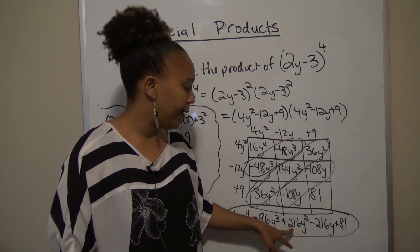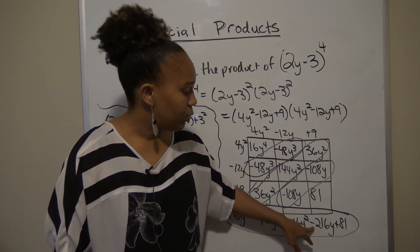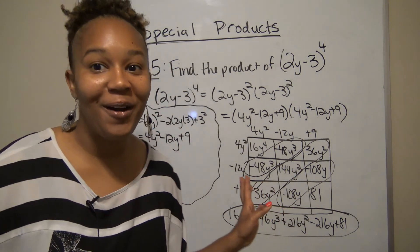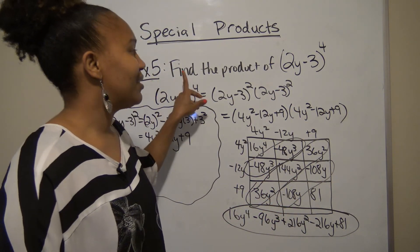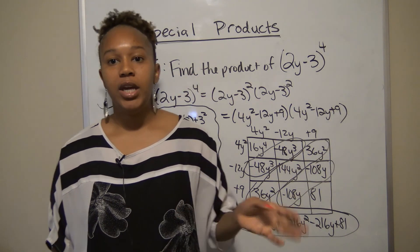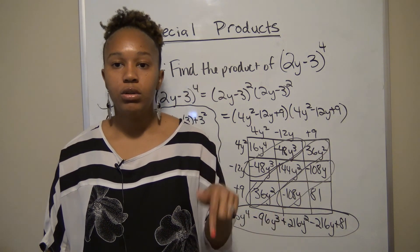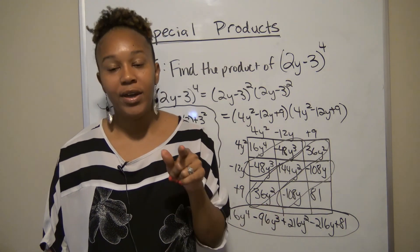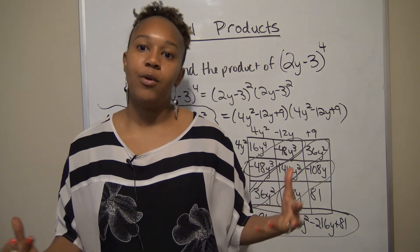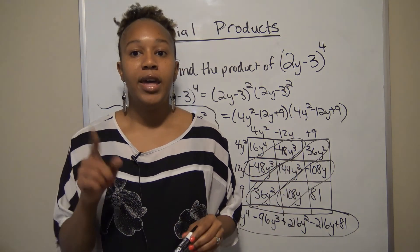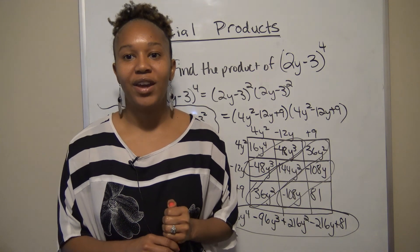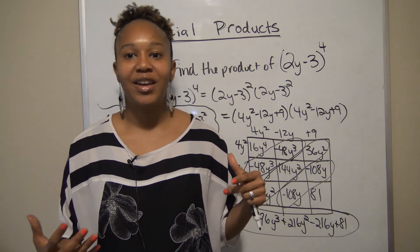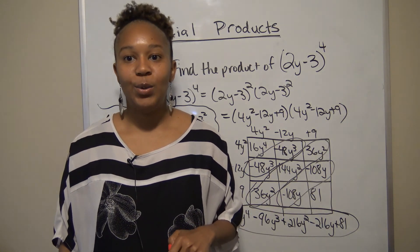So the final solution is 16y⁴ − 96y³ + 216y² − 216y + 81. I know that was a lot of work, but this is how you raise a binomial to the fourth power. If you have any questions, include them in the comments below. If this video was helpful, hit the like button, and subscribe to the channel and hit the bell for notifications. Thanks for watching, and check out the next video on dividing monomials.